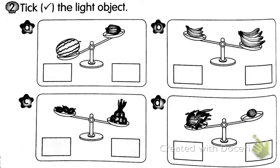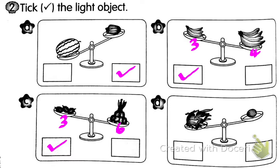Look at Picture A — watermelon and star fruit. Which one is light? The small one is light — the star fruit. Picture B: compare two bananas with four bananas. Which one is lighter? The least amount. Picture C: three rambutan compared to six rambutan — the lighter one is the three. Picture D: dragon fruit compared to kiwi — the light one is the kiwi, small means light.